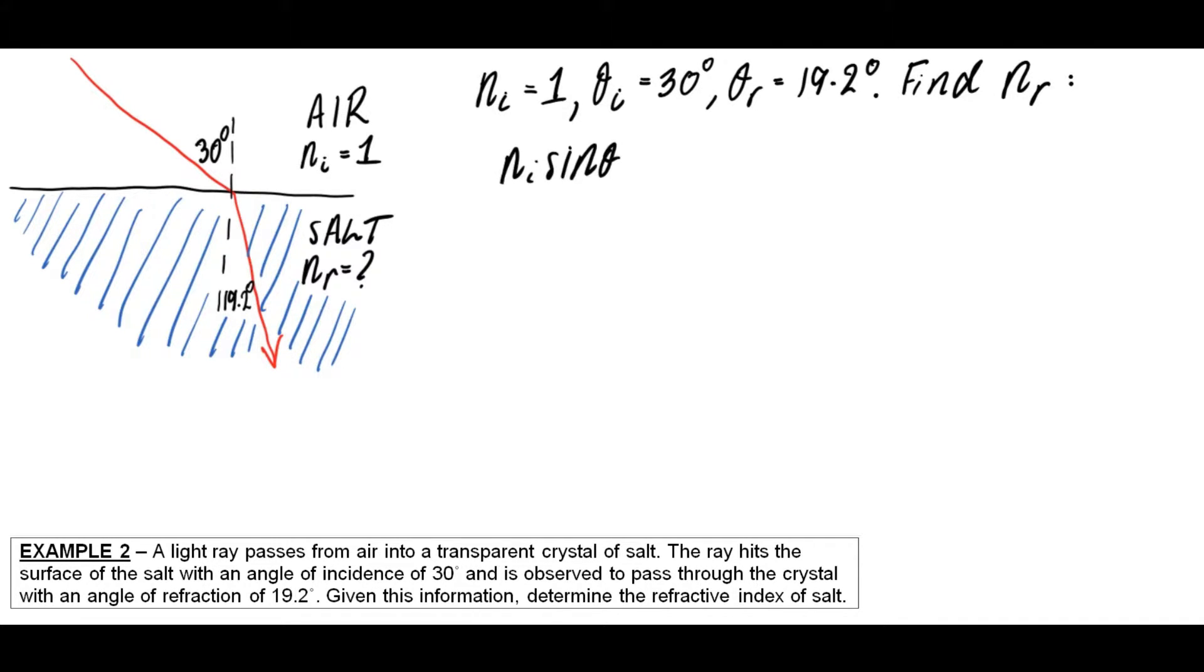So like before, I start by writing down the regular version of Snell's Law. And then here I'm going to rearrange it like I did before, but this time I'm going to rearrange it to make nr the subject, because that's what I'm trying to find. And what we'll see here is that the calculations this time are a fair bit simpler. So there's no need to use things like inverse sine or anything like that.